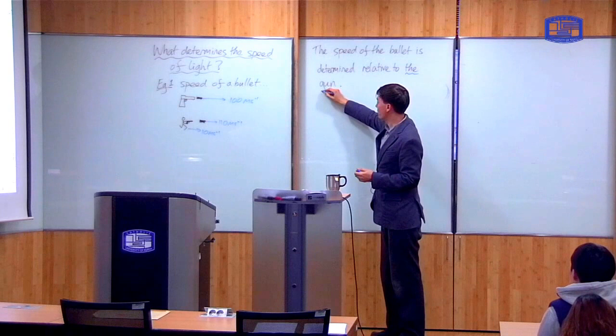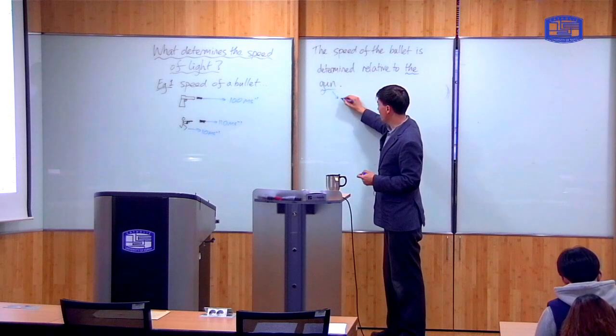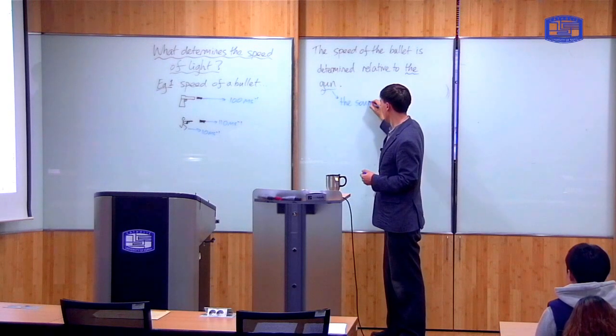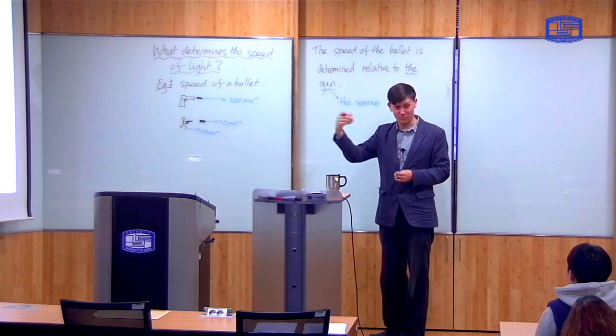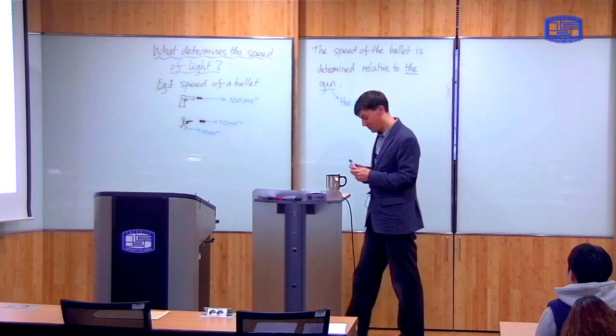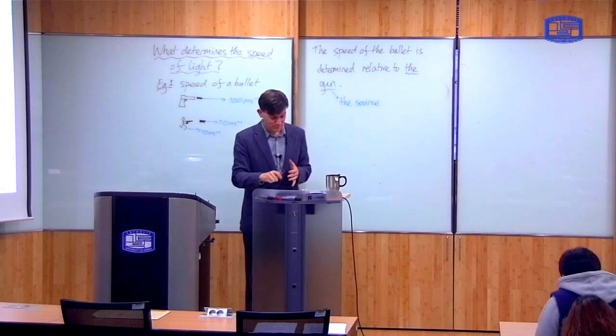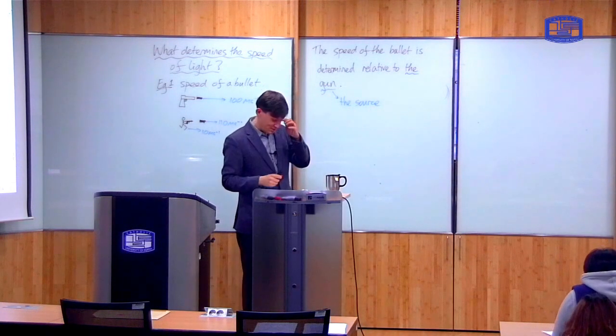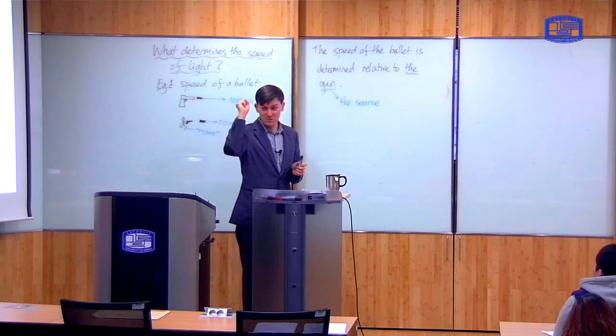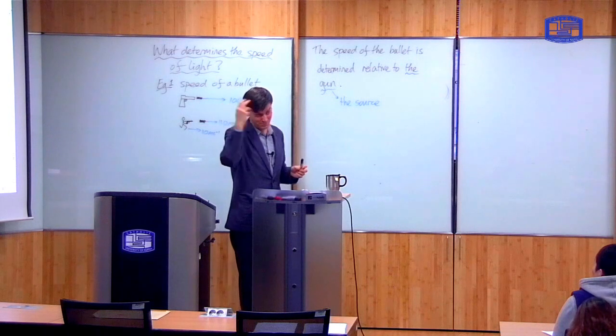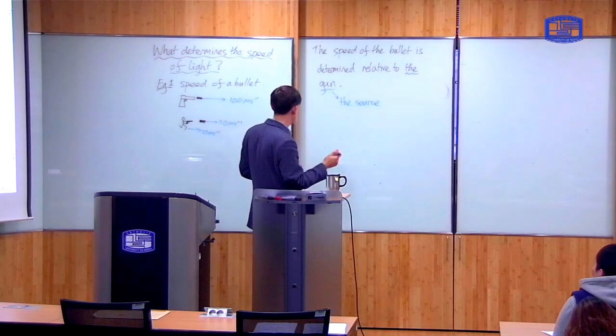So the speed of the bullet is determined relative to the gun. If I change the speed of the gun, then that changes the speed of the bullet fired from the gun. And the general term for the gun in this example is the source. So the source of whatever I am emitting. So the gun is the source of the bullets.